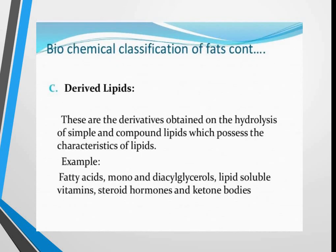The third category is derived lipids — derivatives obtained on hydrolysis of simple and compound lipids which still possess the characteristics of lipids. Examples include fatty acids, mono- and diacylglycerols, lipid vitamins, and steroids.